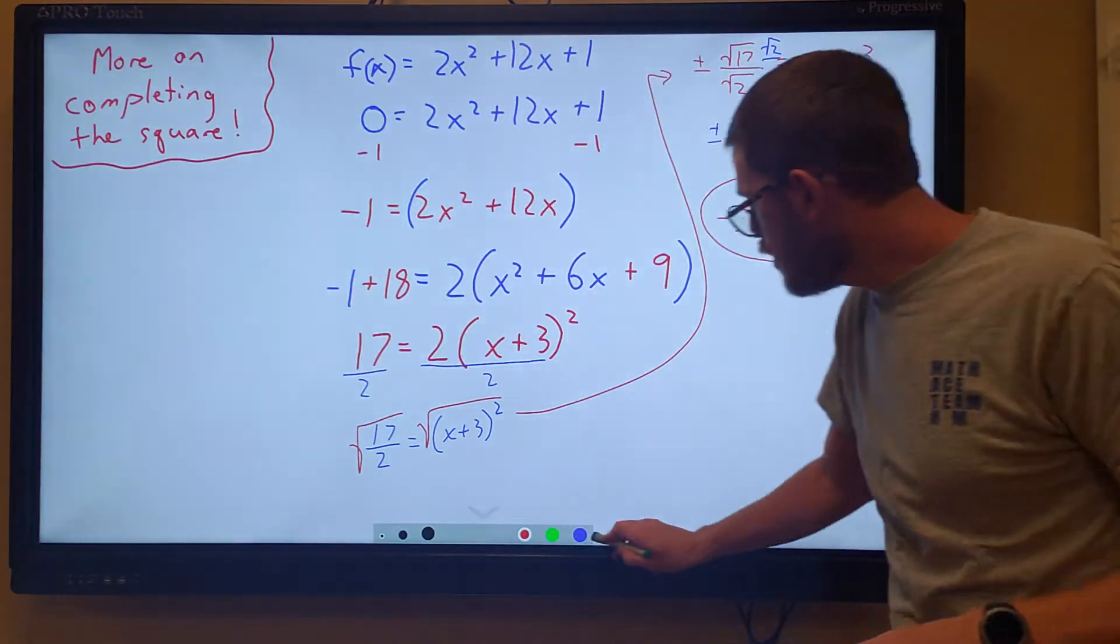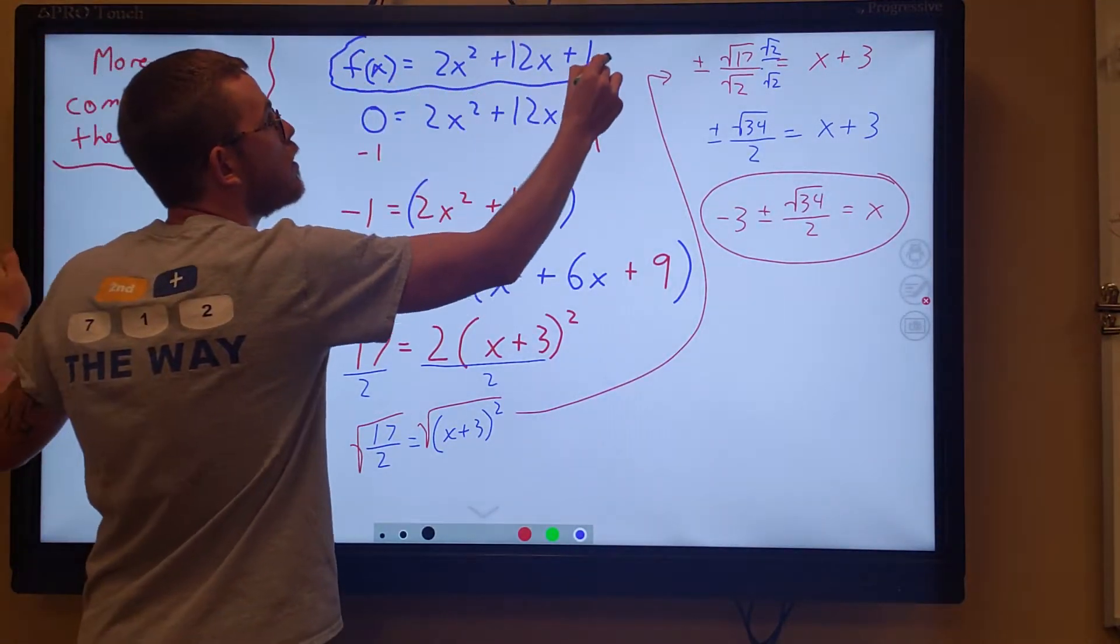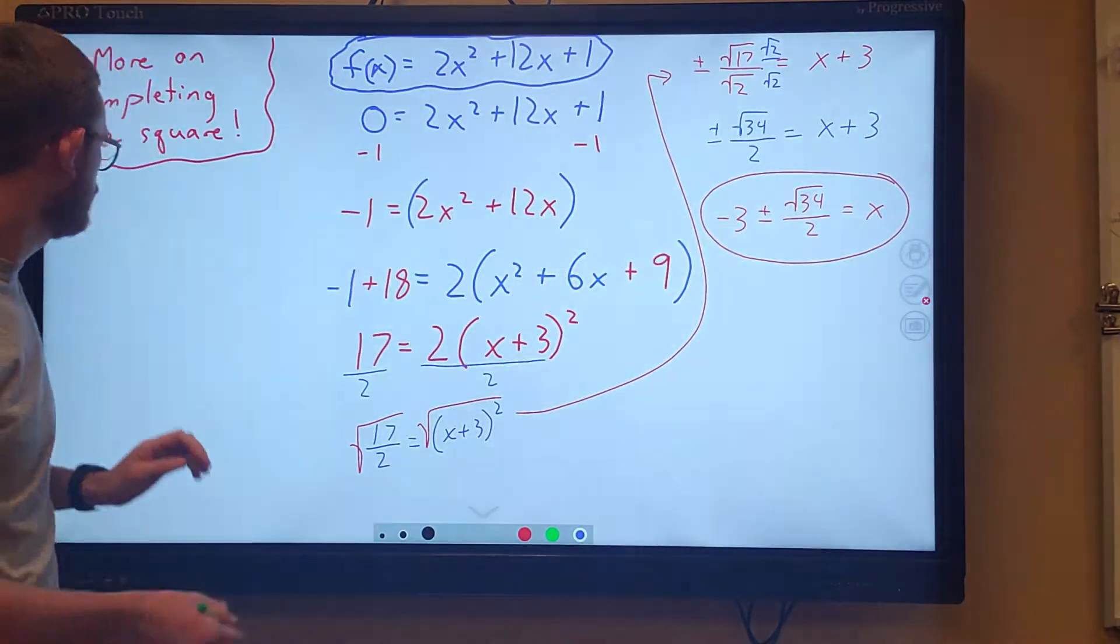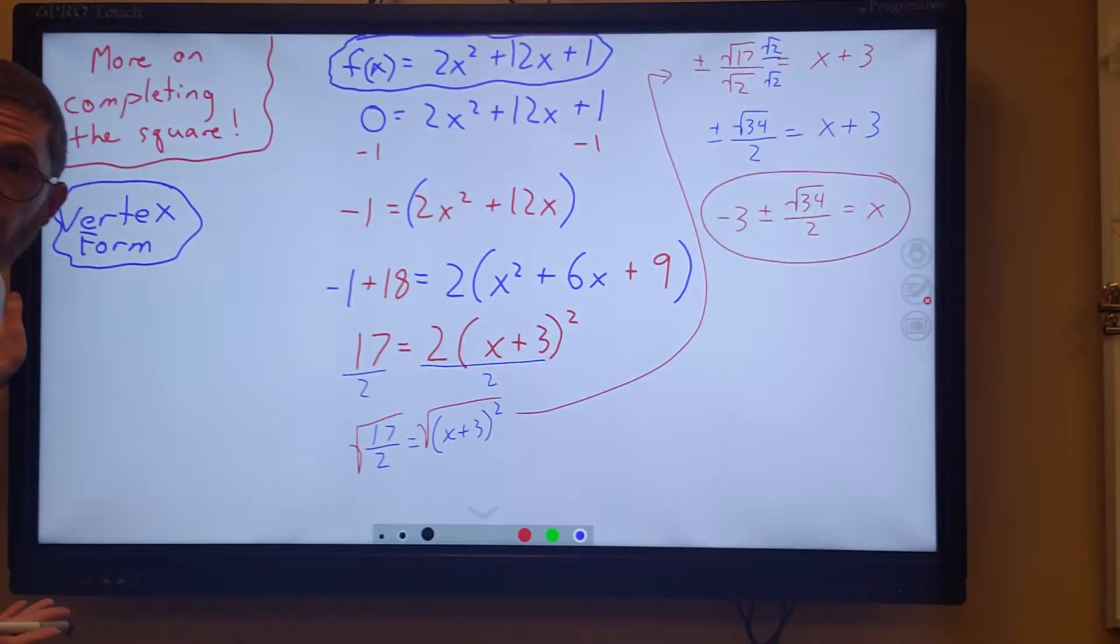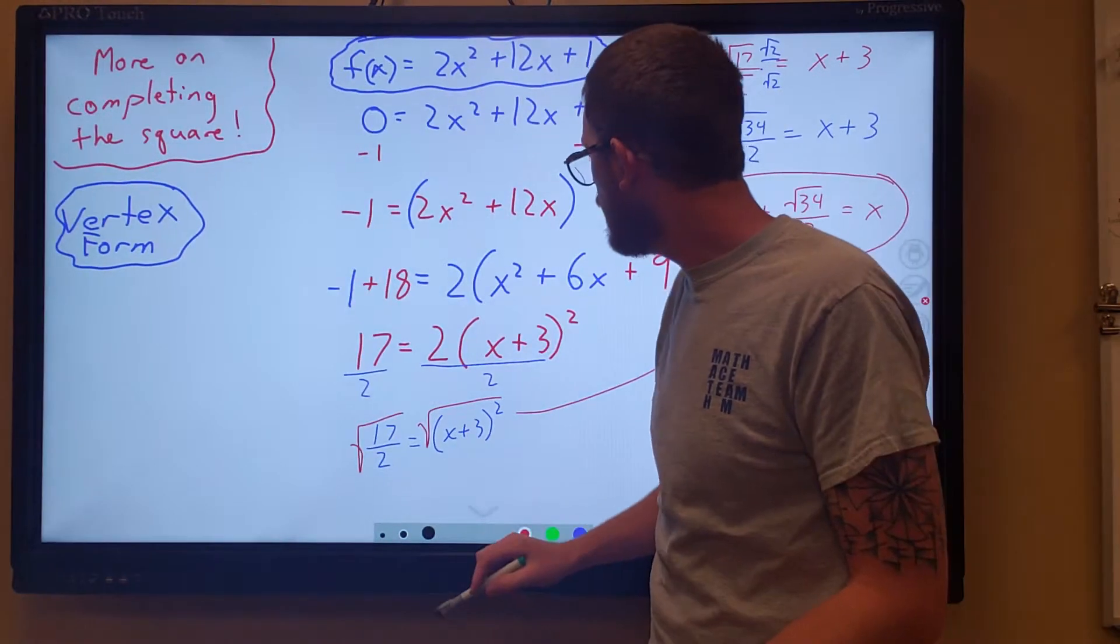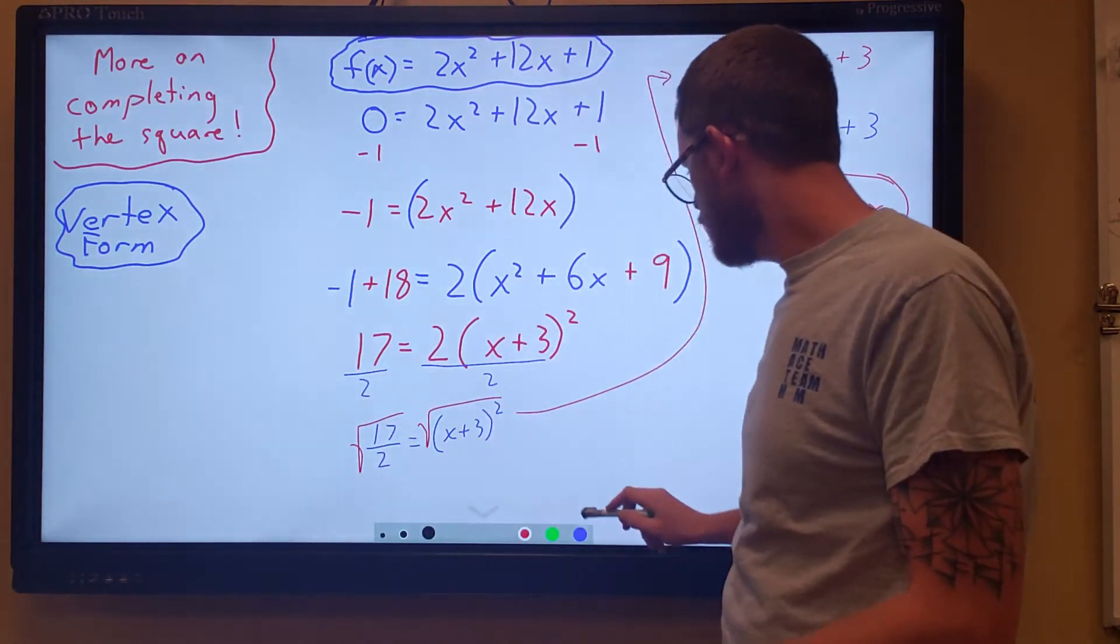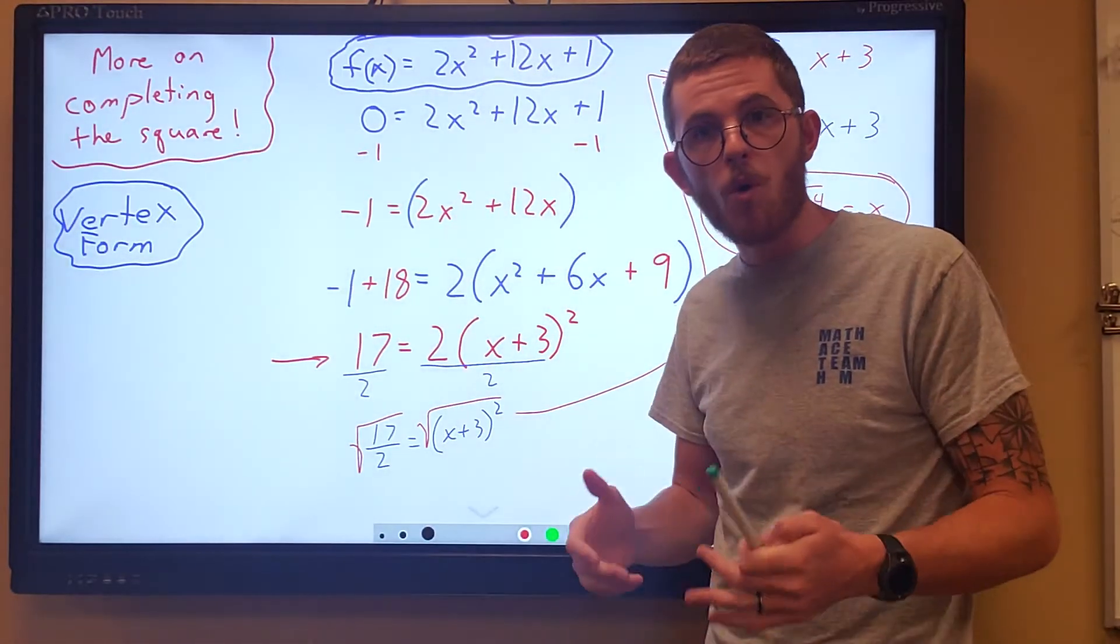Alright, let's, before we erase all of this, if this is our original function, this is what we call standard form. We also have vertex form for a quadratic. Vertex form would show us, we would be able to see what the vertex is if we were looking at this in vertex form. In vertex form, we kind of, we really found that along the way, right? Yeah, before we divided, before we divided by 2 right here, at this step before we divided by 2, we were almost in vertex form.